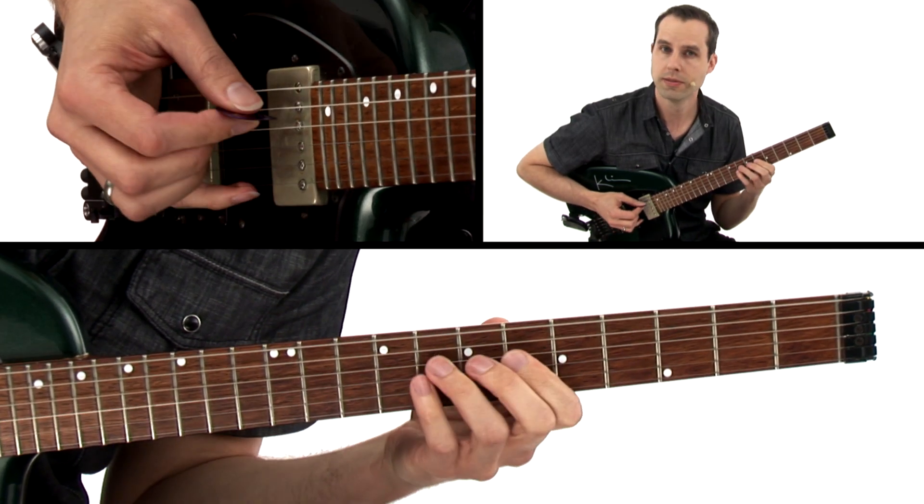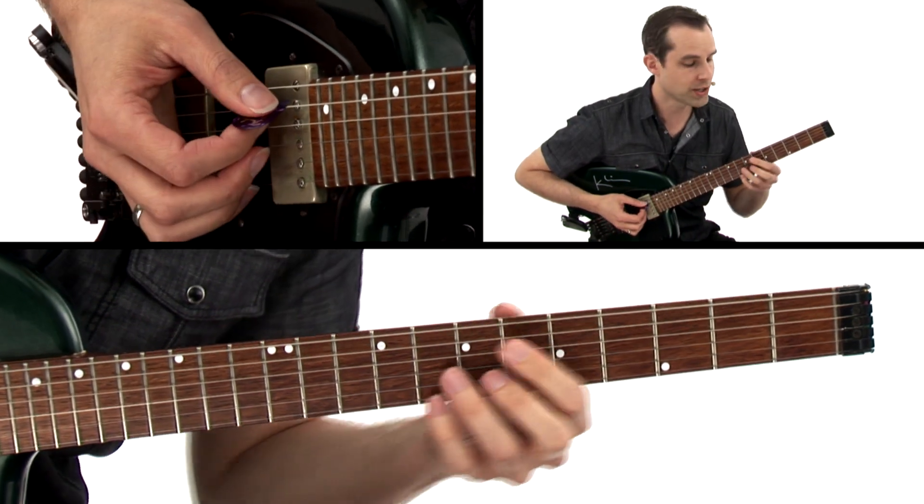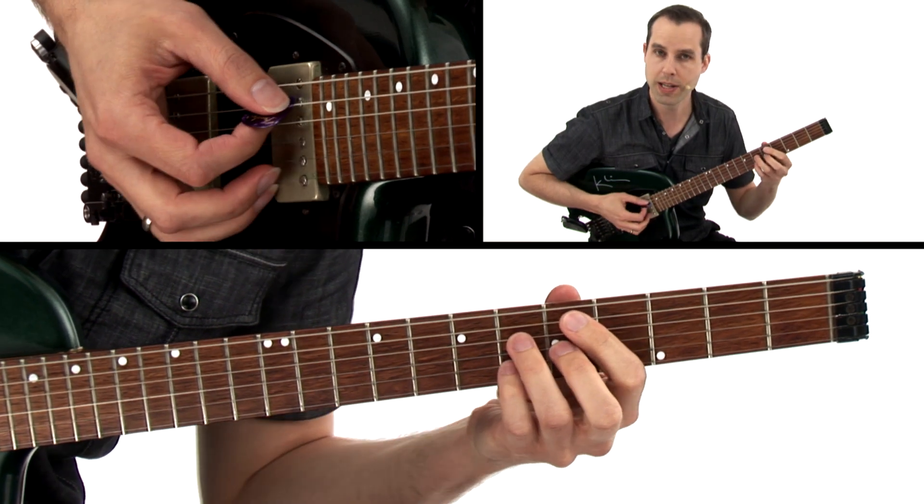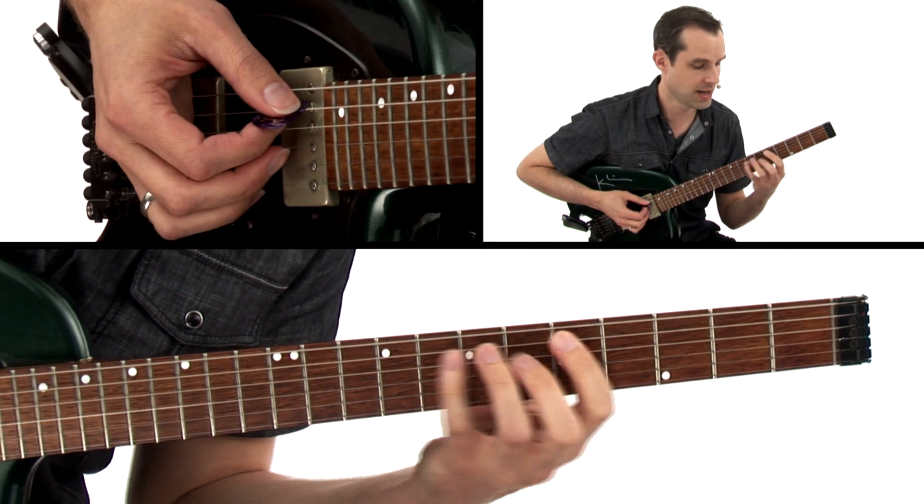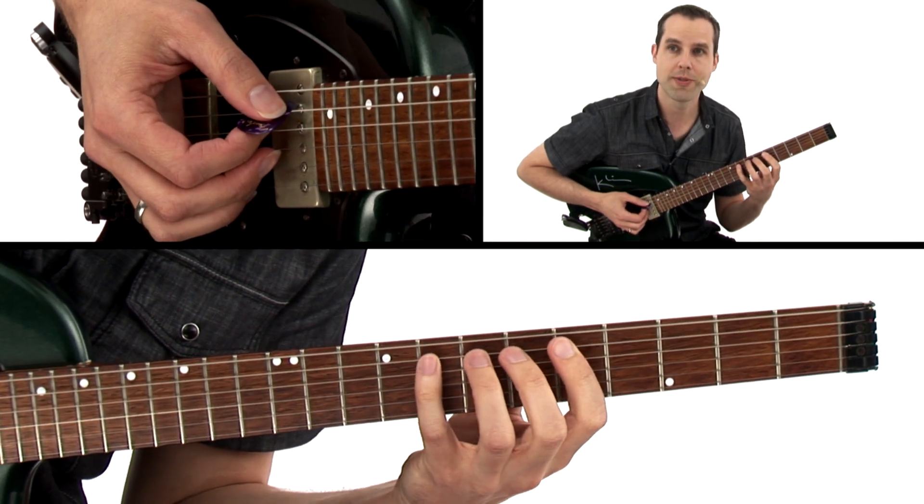Or you could even use a substitute, which would be a D-minor-7-flat-5 and make a 2-1-2 arpeggio off of that.